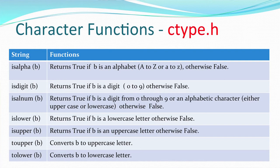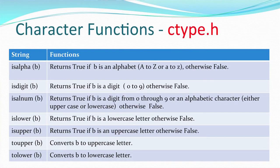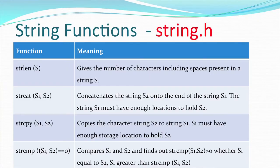Further character functions: isalnum() returns true if the character is either an alphabet or a number, false for special or whitespace characters; islower() checks for a lowercase alphabet; isupper() checks for uppercase; toupper() converts a lowercase character to uppercase — if the character is not lowercase it returns it as-is; tolower() converts uppercase to lowercase similarly.